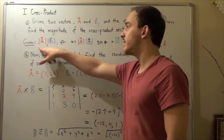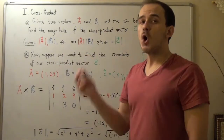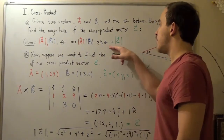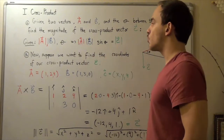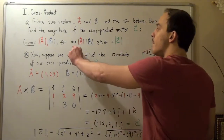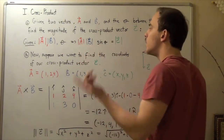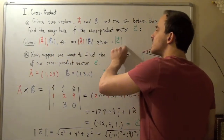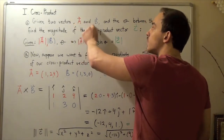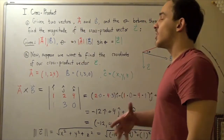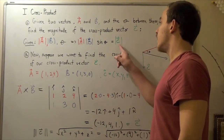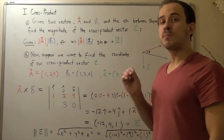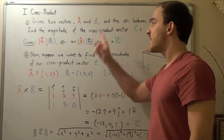In other words, knowing the magnitude of A, the magnitude of B, and the angle between vectors A and B, we can find the magnitude of vector C produced by taking their cross product. The formula is: magnitude of A multiplied by magnitude of B multiplied by the sine of the angle between them. To find the direction of vector C, we use the right-hand rule, and the direction is always perpendicular to both vector A and vector B.